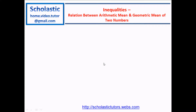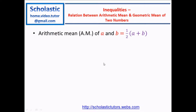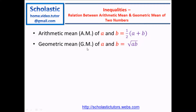Let's see how we can proceed. First, we will write the equation for arithmetic mean, which is half of (a plus b). a and b are the positive real numbers. Similarly, we can write an equation for geometric mean, which is given by the square root of a times b.